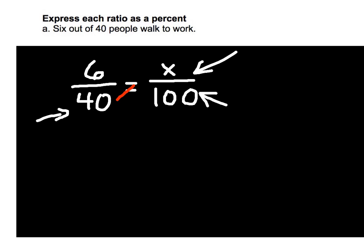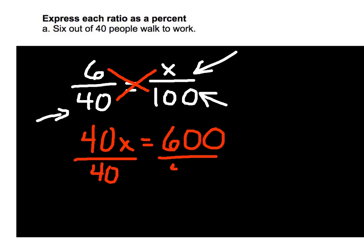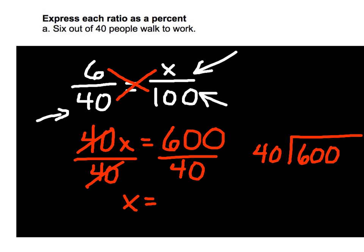So 40 times x is 40x. And 6 times 100 is 600. From here we need to divide both sides by 40. Of course the 40 will cancel each other out, so we'll be left just with x. On the right hand side, 40 goes outside of our bracket, 600 goes on the inside. 40 goes into 60 one time. 20 left over. Drop down that 0 there. And then 40 goes into 200 five times. So our answer for A here is 15%.